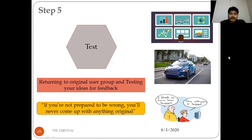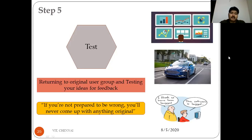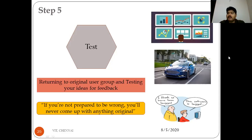The fifth stage is test, where the prototypes are taken to the original user group to get feedback. If you are not prepared to be wrong, you will never come up with anything original. Constructive criticism from testing helps the product become much better and acceptable to every user.